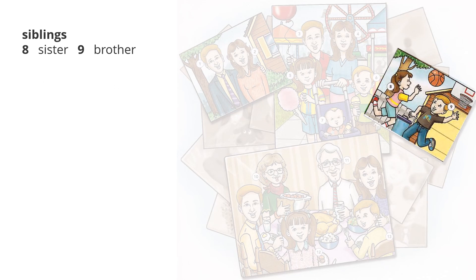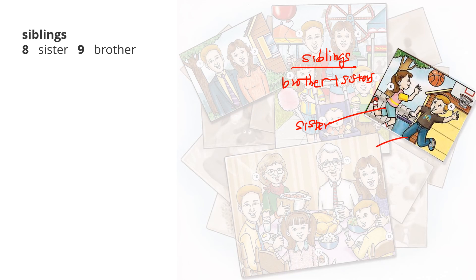It's a picture of siblings. Siblings means brother and sister. There is a sister, and then there is a brother — B-R-O-T-H-E-R. So sister and brother together, you call siblings.